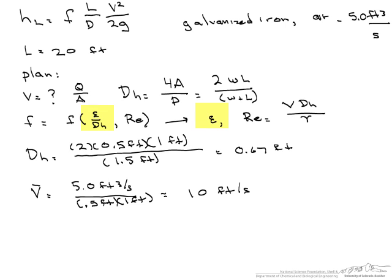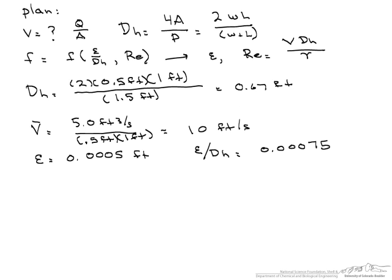Now, there are a number of charts that give roughness factors. In this case, we look up the roughness factor for galvanized iron, and we find that that equals 0.0005 feet. And again, it's a function of this roughness factor divided by the hydraulic diameter, and so this is 0.00075.